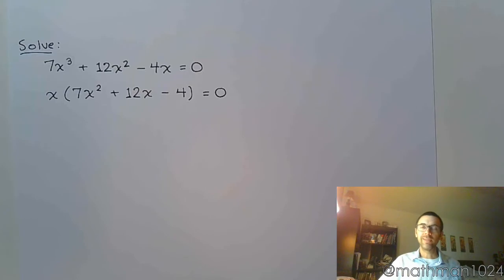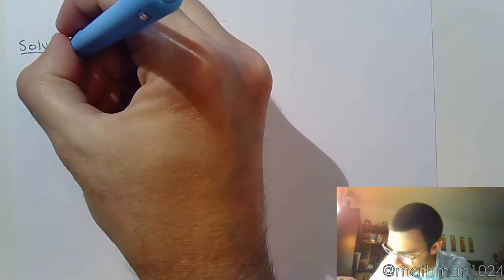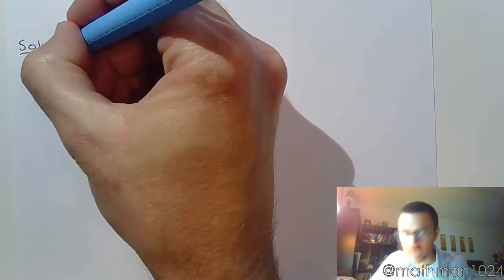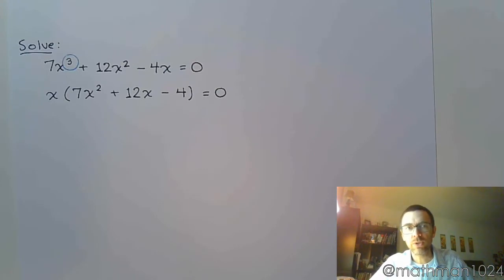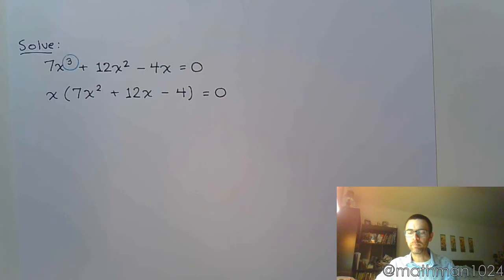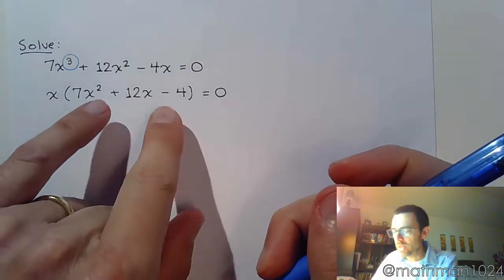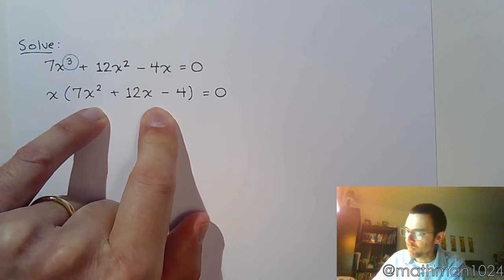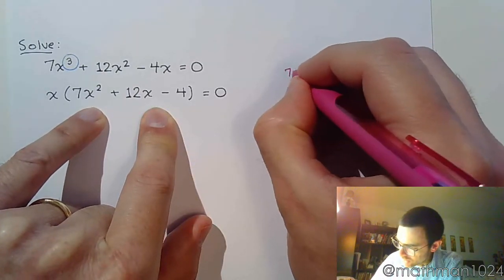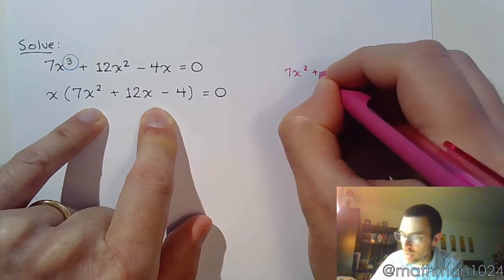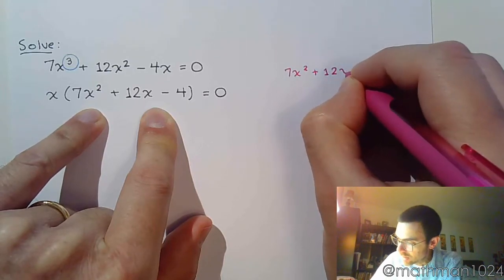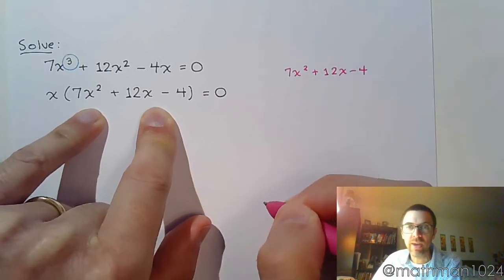Before I did that, I should have pointed out that this equation has a degree of 3, so that means at the end we're supposed to have three solutions. I need to factor that polynomial, but I don't want to deal with it and the x all at the same time. So I suggest you take the trinomial off to the side. Let's factor 7x squared plus 12x minus 4 separately.